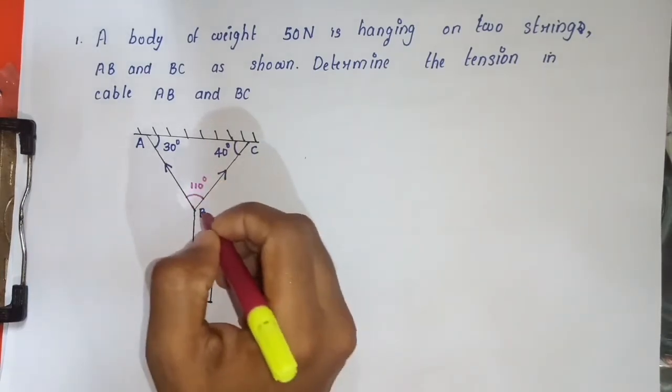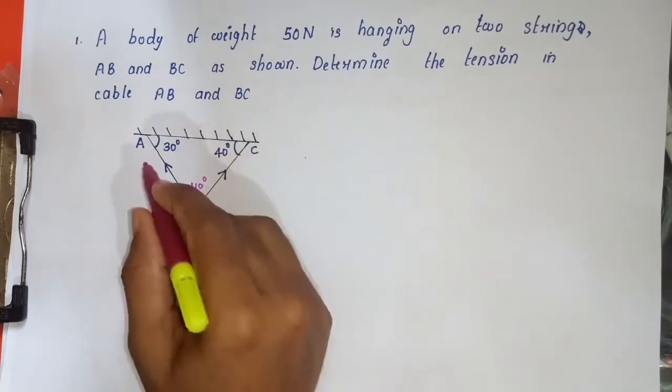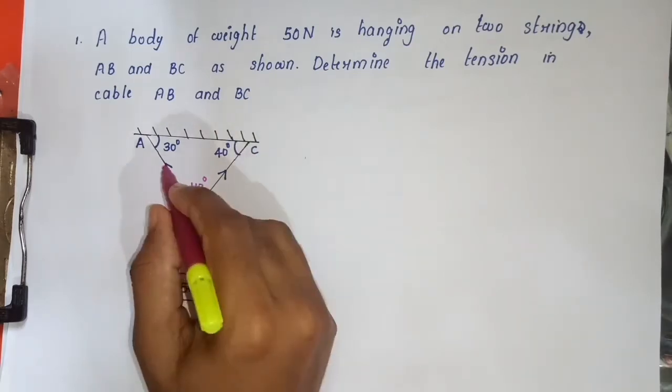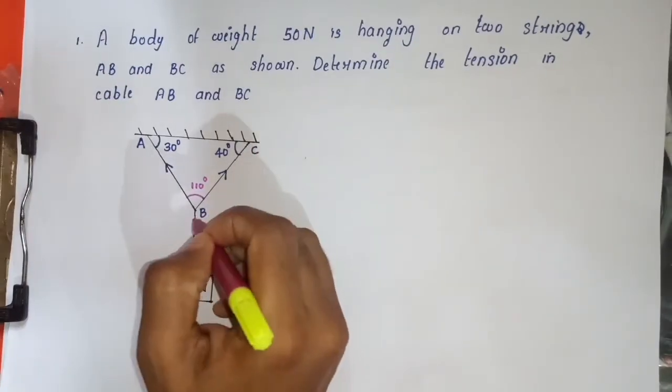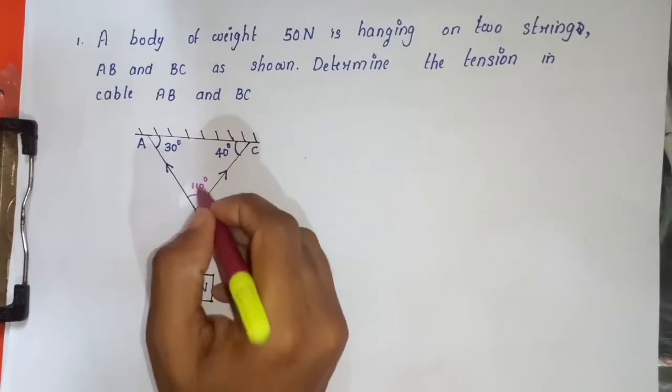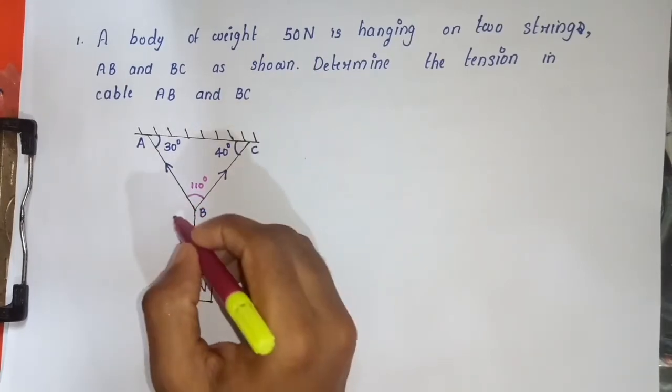So this angle is 110 degrees. Now for the strings: the angle opposite to TBC is 110 degrees. This gives us the angle at point B in the triangle.